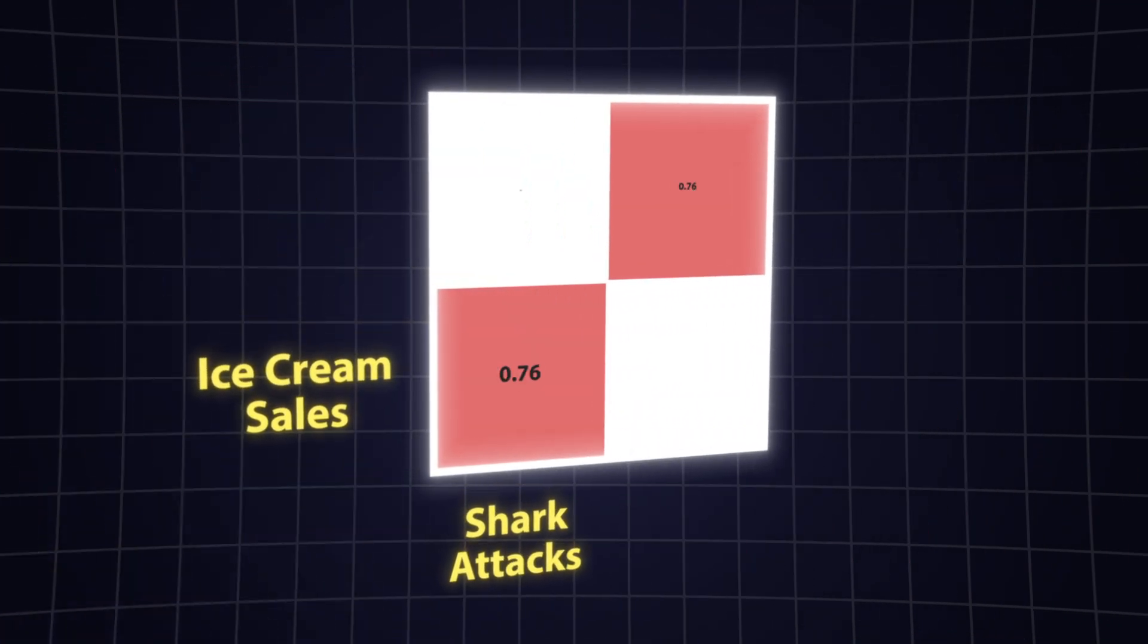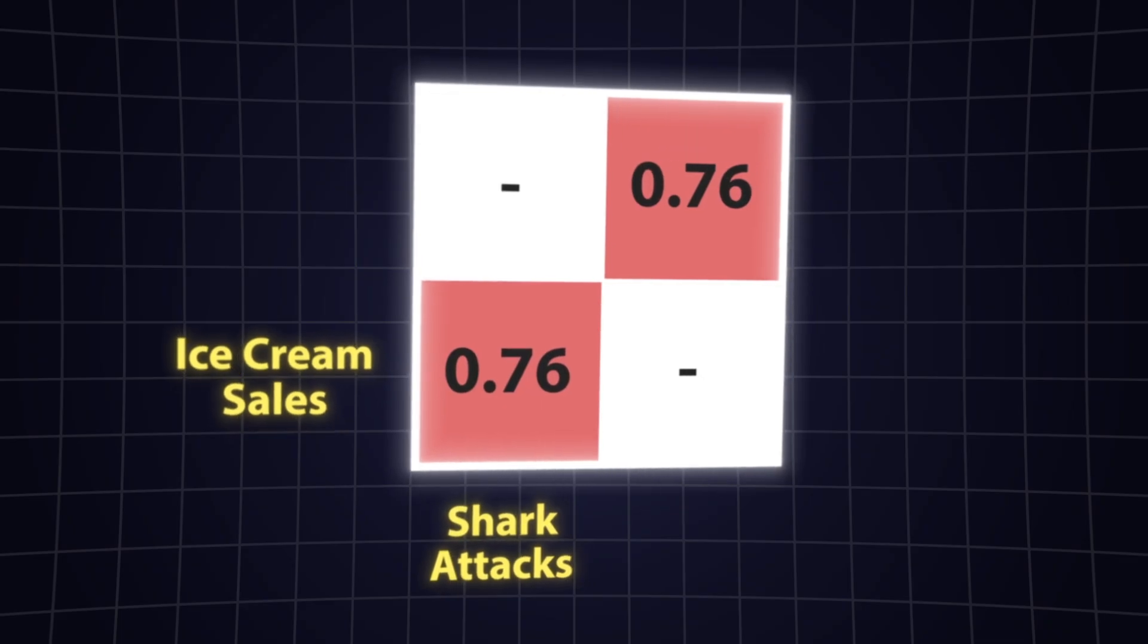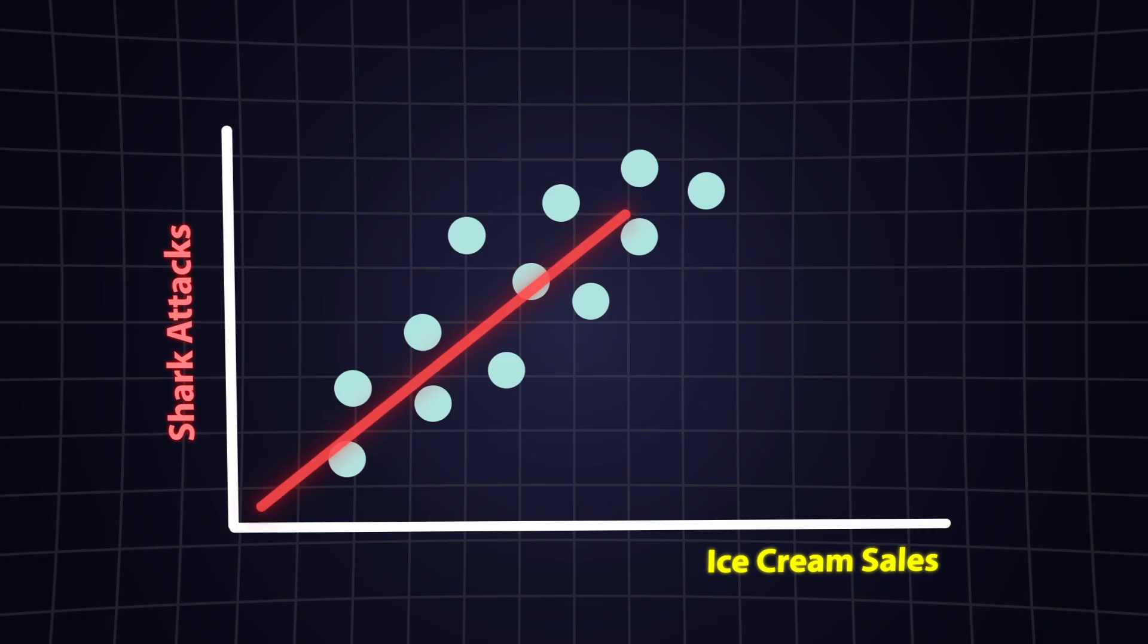While studying machine learning, you have probably seen correlation heat maps showing relationships between variables. In this case, ice cream sales and shark attacks show a positive correlation.